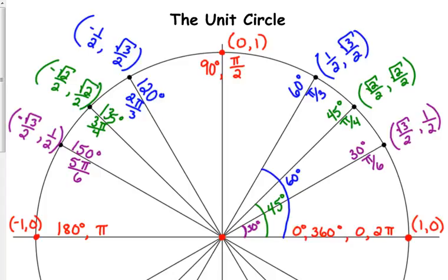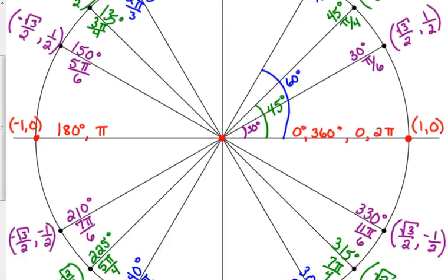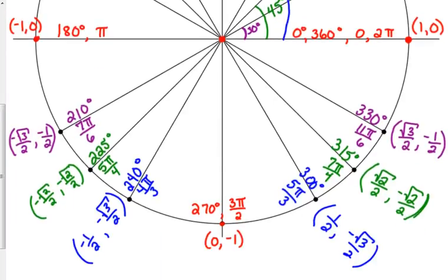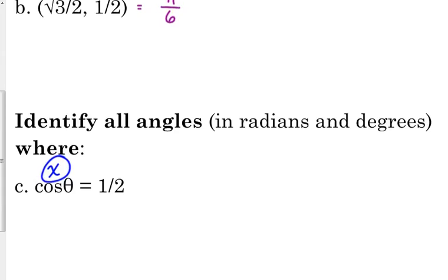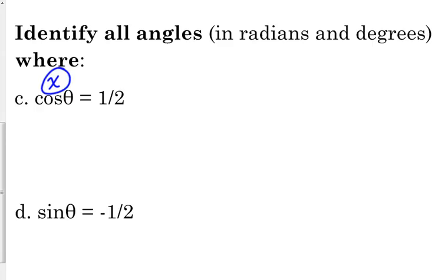I know that happens in the first quadrant at 60 degrees and pi over 3. And that also happens in the fourth quadrant at 300 degrees and 5 pi over 3. So, those are my answers there. 60 degrees, theta equals 60 degrees or 300 degrees. And in radians, pi over 3 and 5 pi over 3.